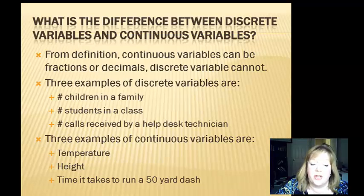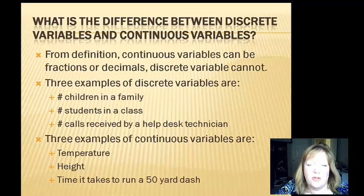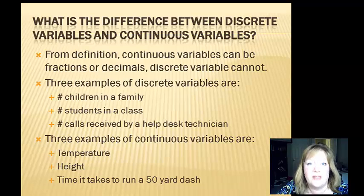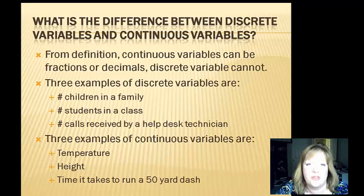Three examples of continuous variables are temperature — you could have 98.6 degrees. Something that's always puzzled me: if your body temperature has to maintain 98.6 degrees, how come you're hot when it's 98 degrees outside? Why doesn't it feel comfortable? Maybe one of you science people can answer that. Your height could also be an example — I'm 5'6 and a half, but when I look at how much I'm supposed to weigh, I round to 5'7. And the time it takes to run a 50-yard dash, because you've got tenths and hundredths of seconds, especially in the Olympics.